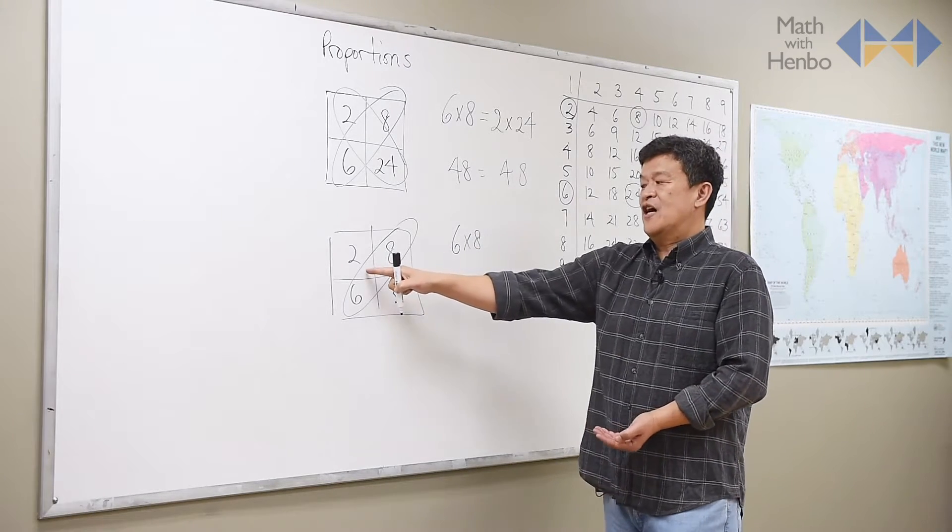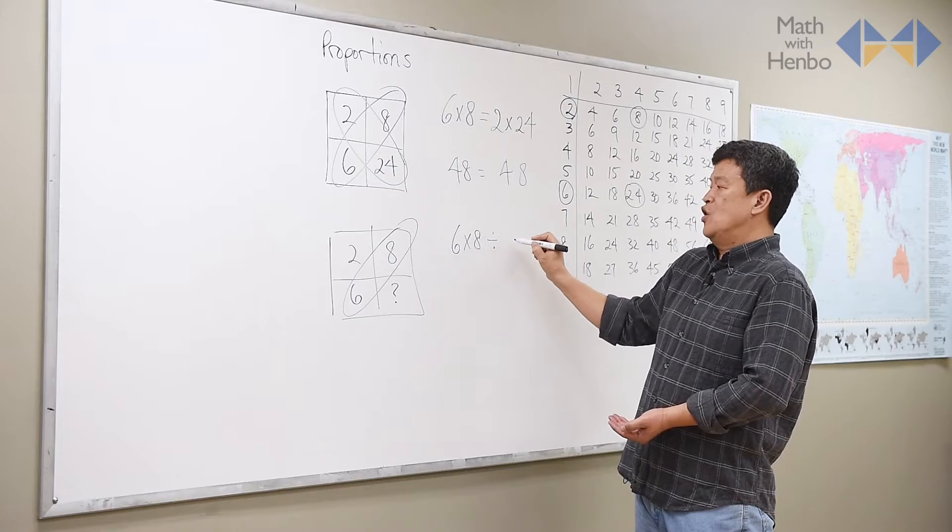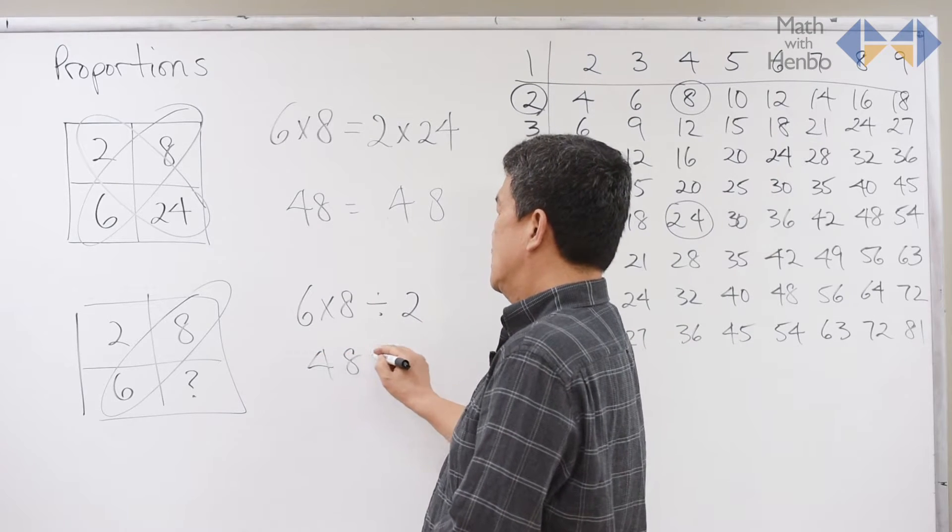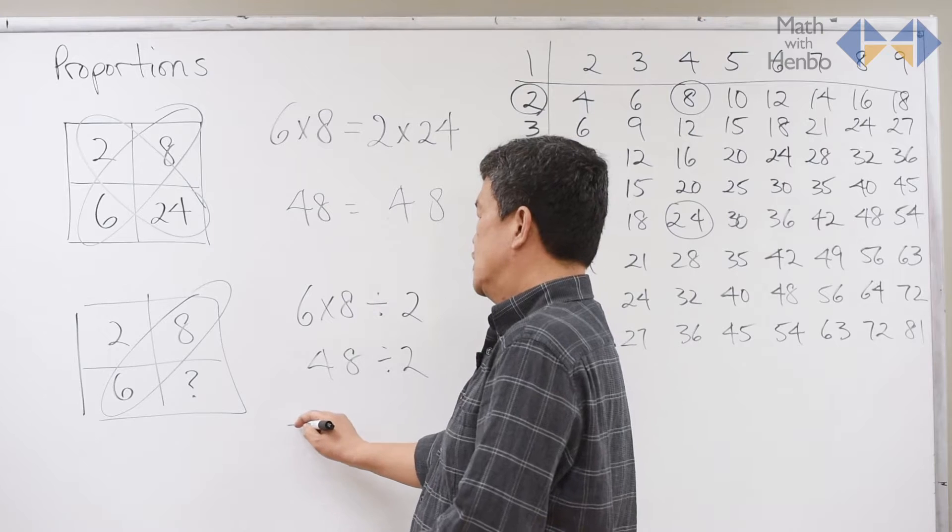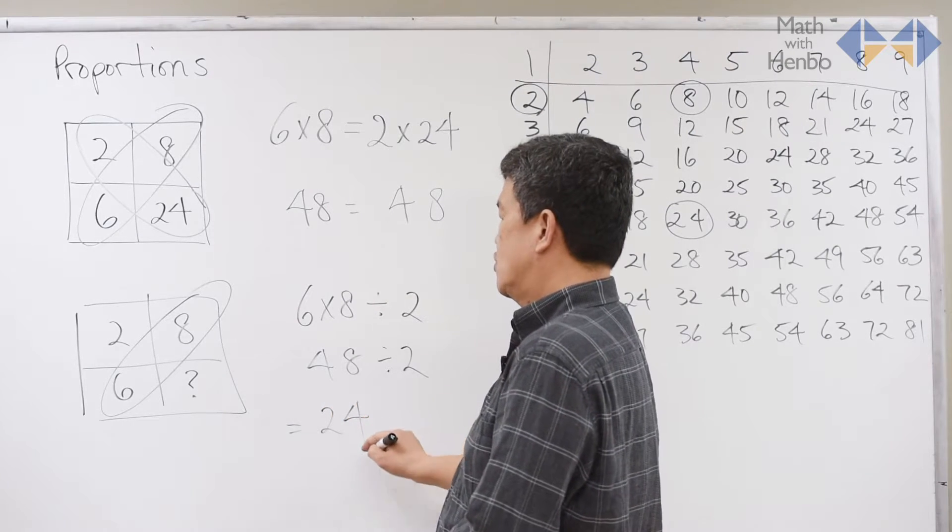And then divide it by the number that paired with the unknown number. So this is 48 divided by 2, which gives us 24.